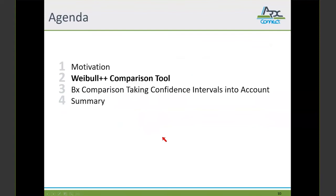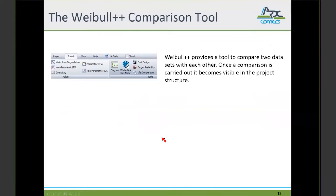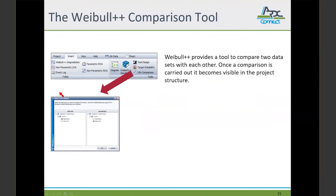The software Weibull++ contains a life comparison tool. Let us now have a look at it. The life comparison tool can be found in the insert ribbon. And by activating the tool, such a select data sheet window pops up. Once a calculation has been carried out, the life comparison becomes visible in the project structure.